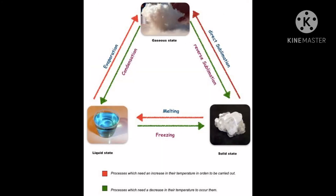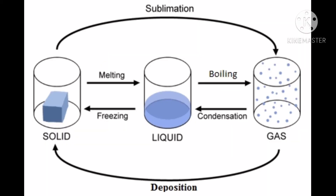In this picture you can clearly see the changes in the state of matter. Solid melts to form liquid, and liquid evaporates to form gas. Gases after reversible sublimation again form the solid state. This process requires an increase in temperature to be carried out, and in this way the state of matter will change.